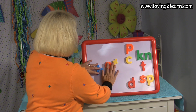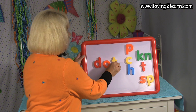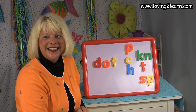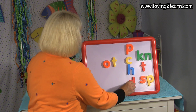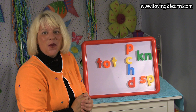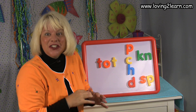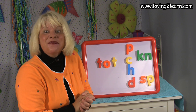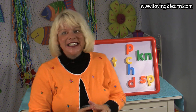So I put that back up there. I'm gonna take the H off and put the D on. What word did I just make? Dot. Take that off, put the T on. What word did I just make there? Tot. Like the little girl — she was a tot. Good. You can play these games over and over again.